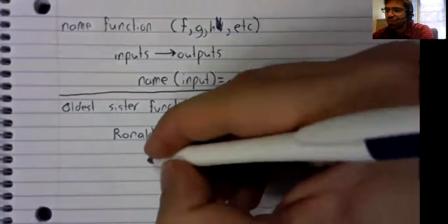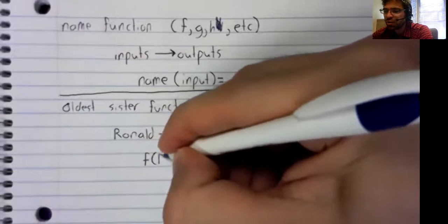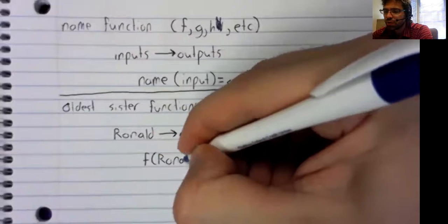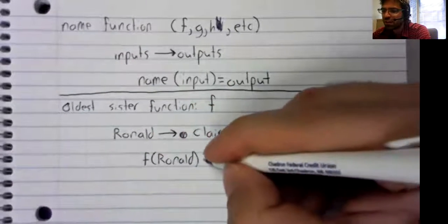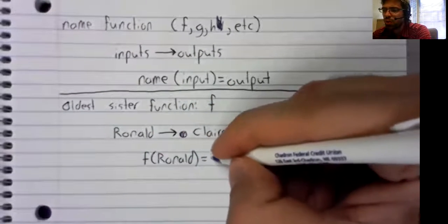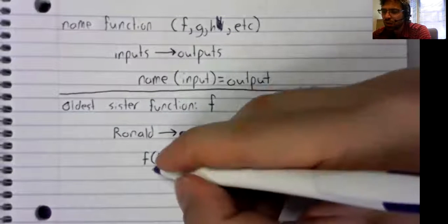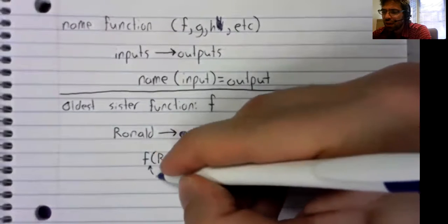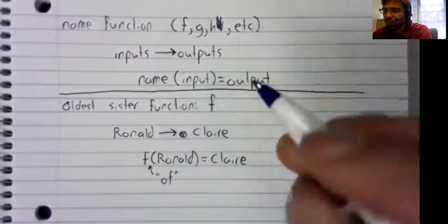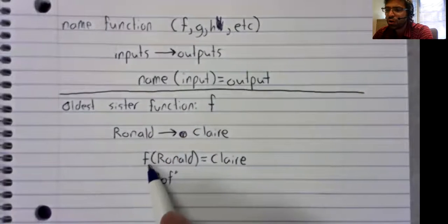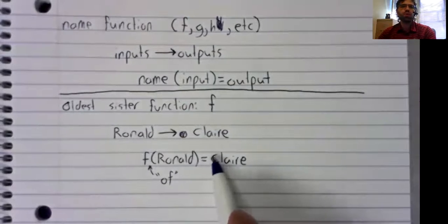And using function notation, we'd write f, Ronald in parentheses equals Claire. And this is read as f of Ronald equals Claire.